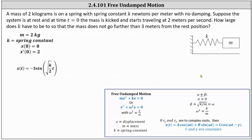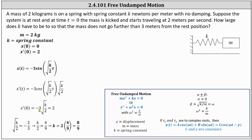Now we'll use the second initial condition x prime of zero equals two to determine the value of k. First we find the derivative: x prime of t equals negative three cosine of the square root of k divided by two times t, times the square root of k divided by two, using the chain rule. Substituting zero for t and setting the equation equal to two, we have negative three times cosine zero which is one, times the square root of k divided by two equals two.